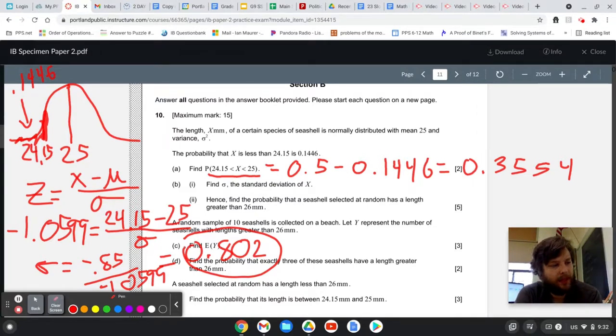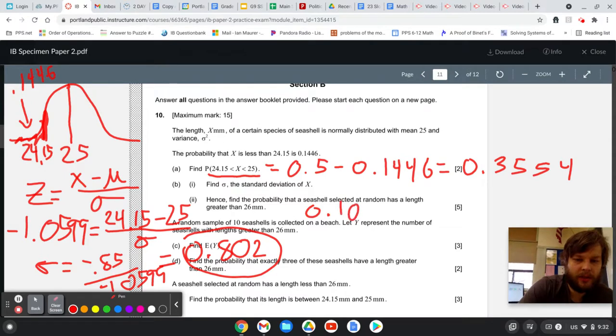The mu is the mean, 25. The sigma is what we just calculated, 0.802. And hit enter until it pops out, and what I get is that number right there, 0.106.